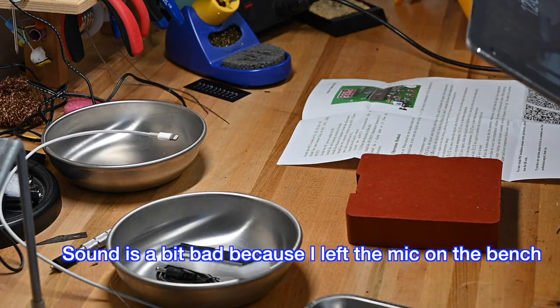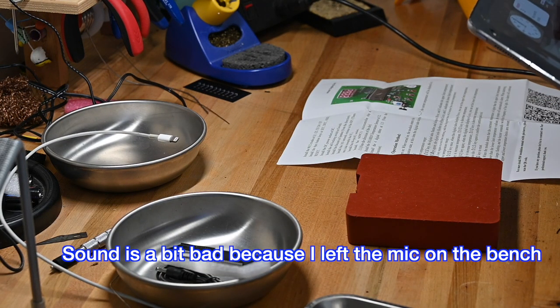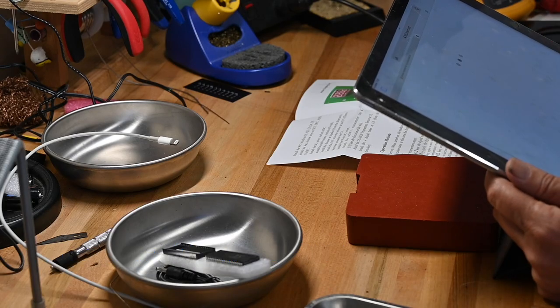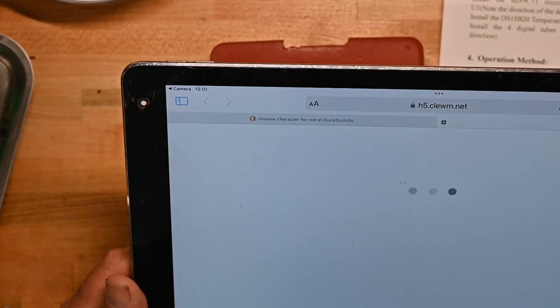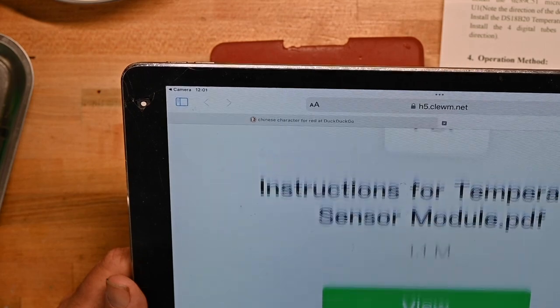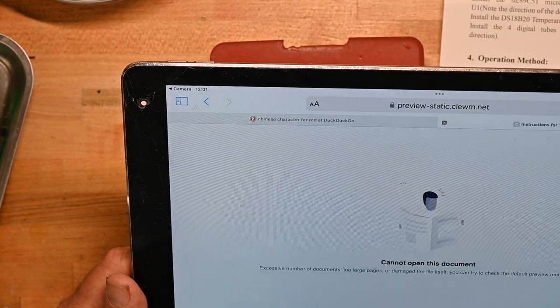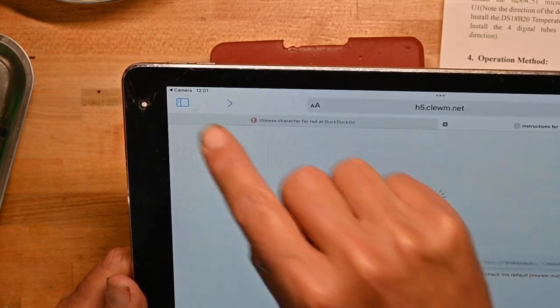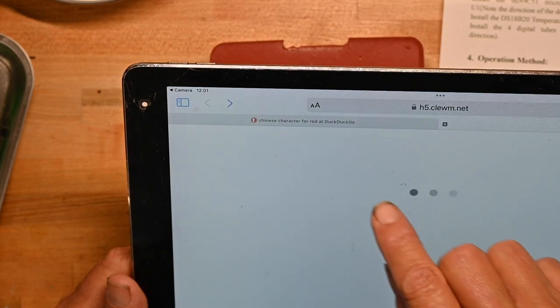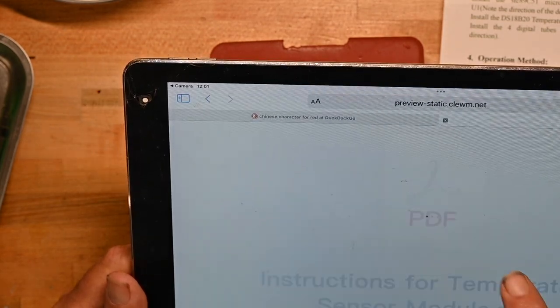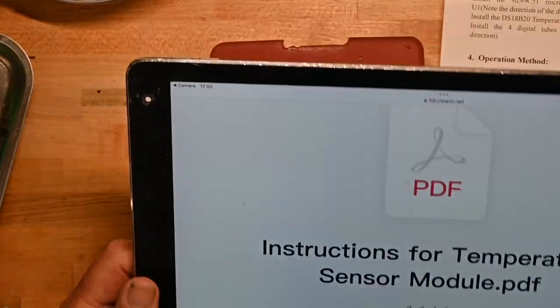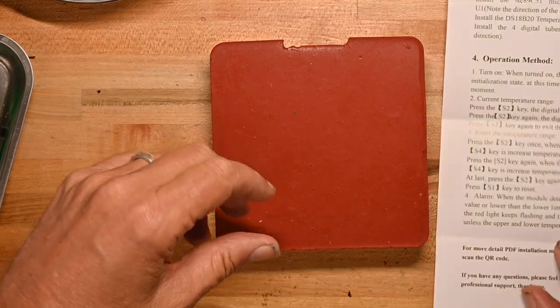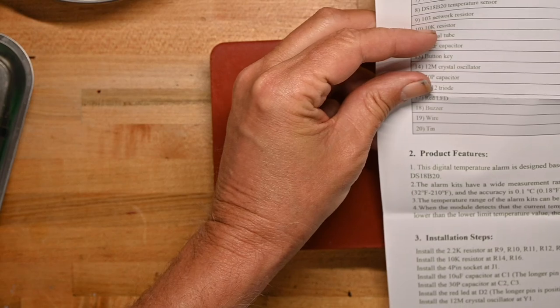Before we start, let me zap up the build guide. If I can find it. It's doing a lot of searching, going to China, whatever. It's a PDF. We'll hit the PDF. Cannot open the document. Excessive number of documents, too large pages, something. It's acting not fun. So I can't bring up the build document because it won't download. That's a bit of a pain.